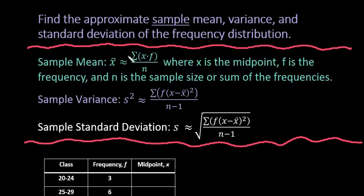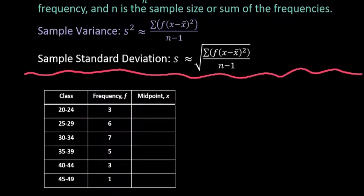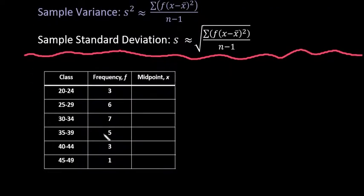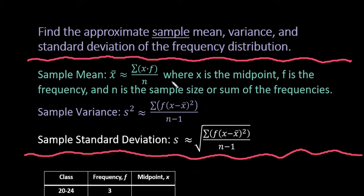In this video I want to show you how to find the approximate sample mean, variance, and standard deviation of a given frequency distribution. This can be done whether you are given a frequency distribution in the format listed below or if you are given a histogram with your frequencies. All of the formulas are programmed into your calculator, and I have a video that shows hand calculations if you need that — I'll put a link in the description below.